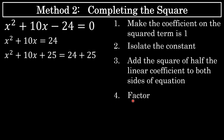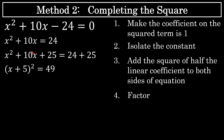That takes us to step 4: factor. I'm going to factor the left side of this equation. X squared plus 10x plus 25 will always factor, and if you do step 3 correctly, it will factor to a perfect square — a quantity squared. It factors to x plus 5 squared. When you complete the square, it's always x plus the square root of the constant added to both sides; the square root of 25 is 5. So x squared plus 10x plus 25 factors to x plus 5 squared. On the right side, I've added 24 and 25 to get 49.